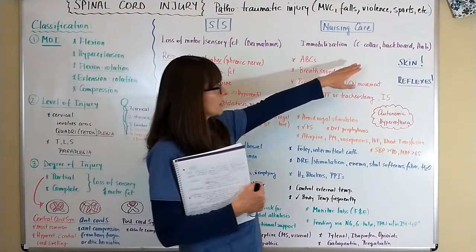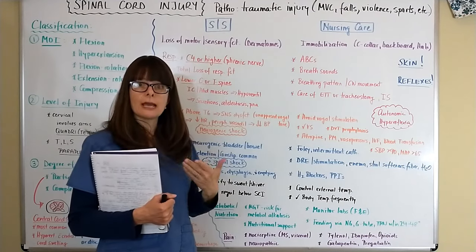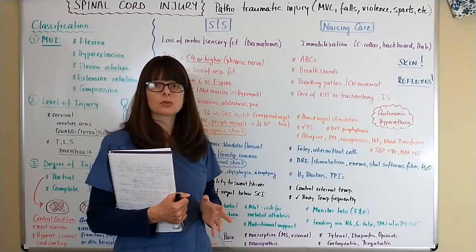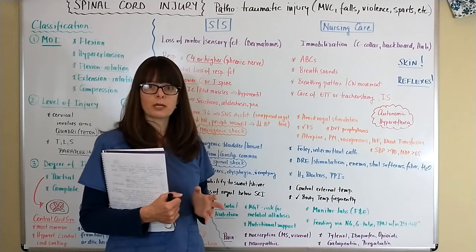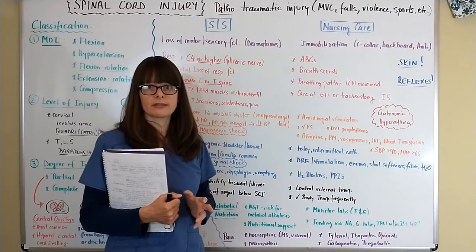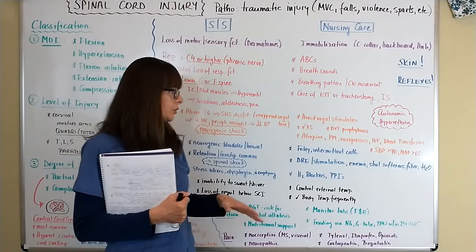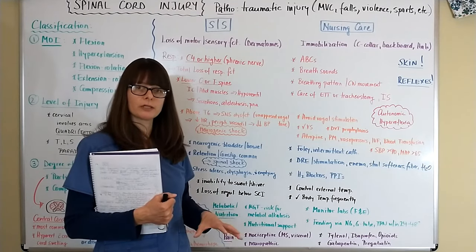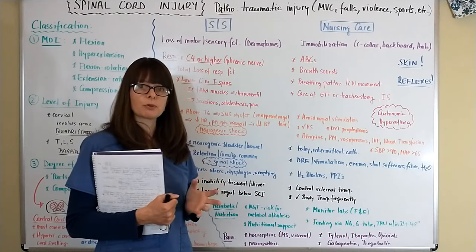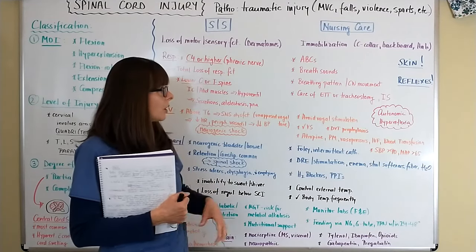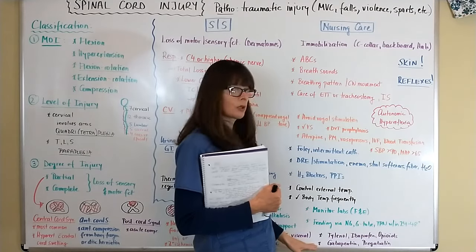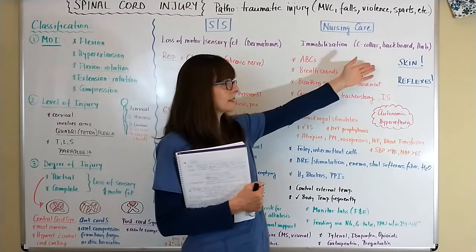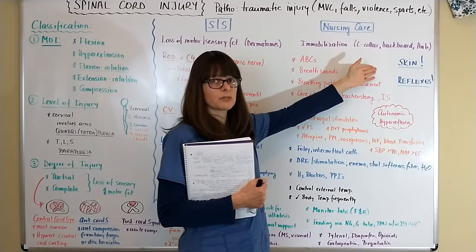Skin care is critical. Because mobility is impaired, we must be meticulous about repositioning and skin care. Approximately 25% of patients with spinal cord injury will suffer from a sacral pressure ulcer. This applies not only during the acute phase but also long-term — for example, paraplegic patients in a wheelchair need adequate cushioning and education on how and how frequently to reposition. Always assess pre-albumin to monitor nutritional status, as poor nutrition contributes to skin breakdown and pressure ulcers.